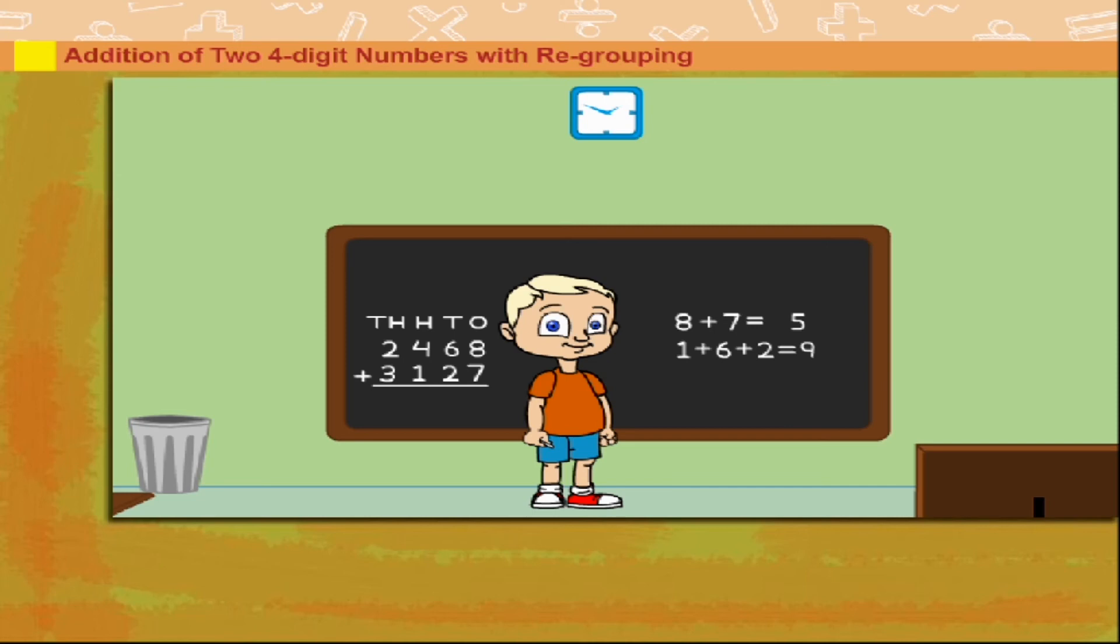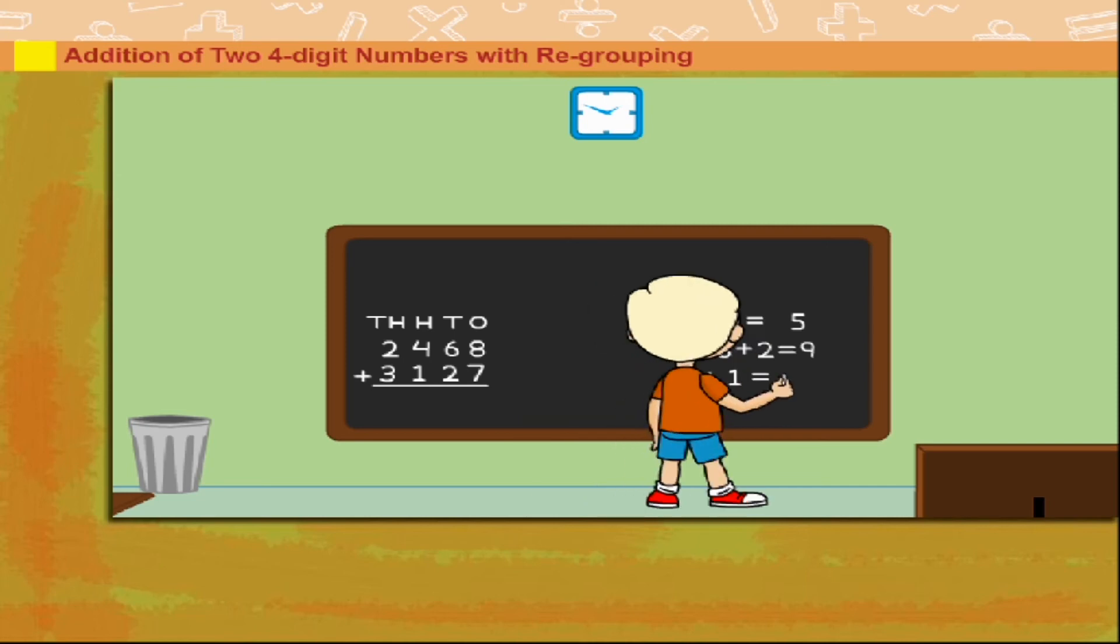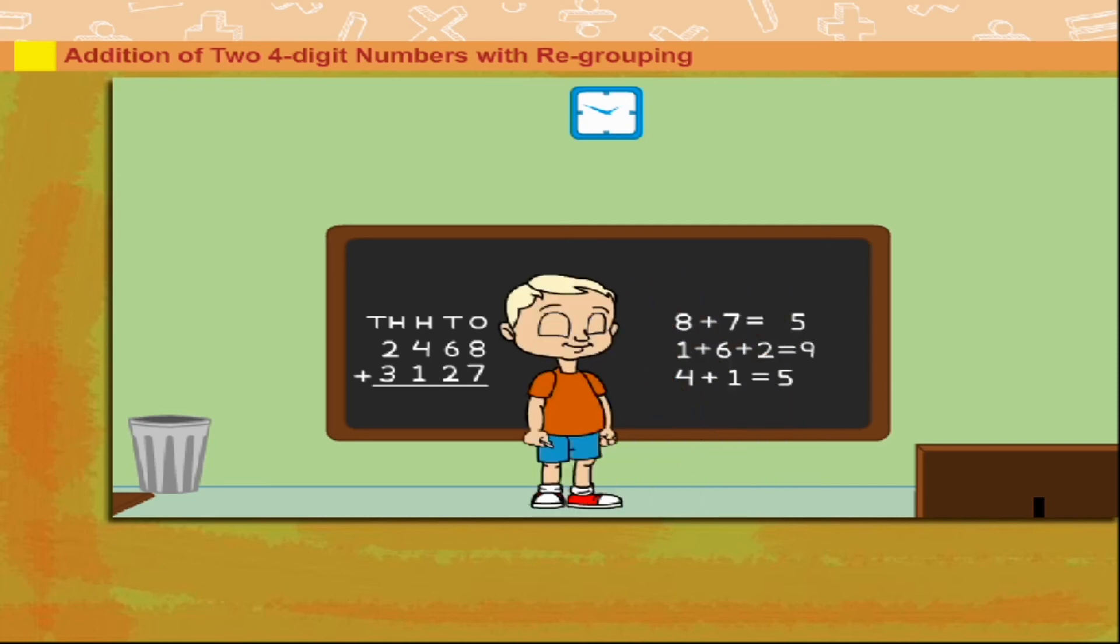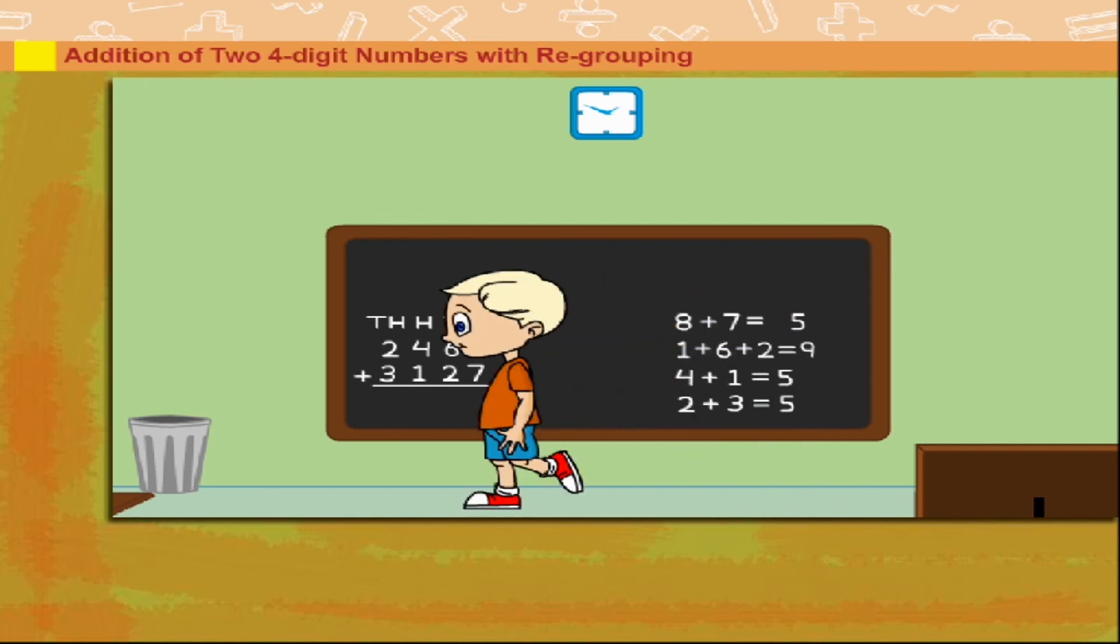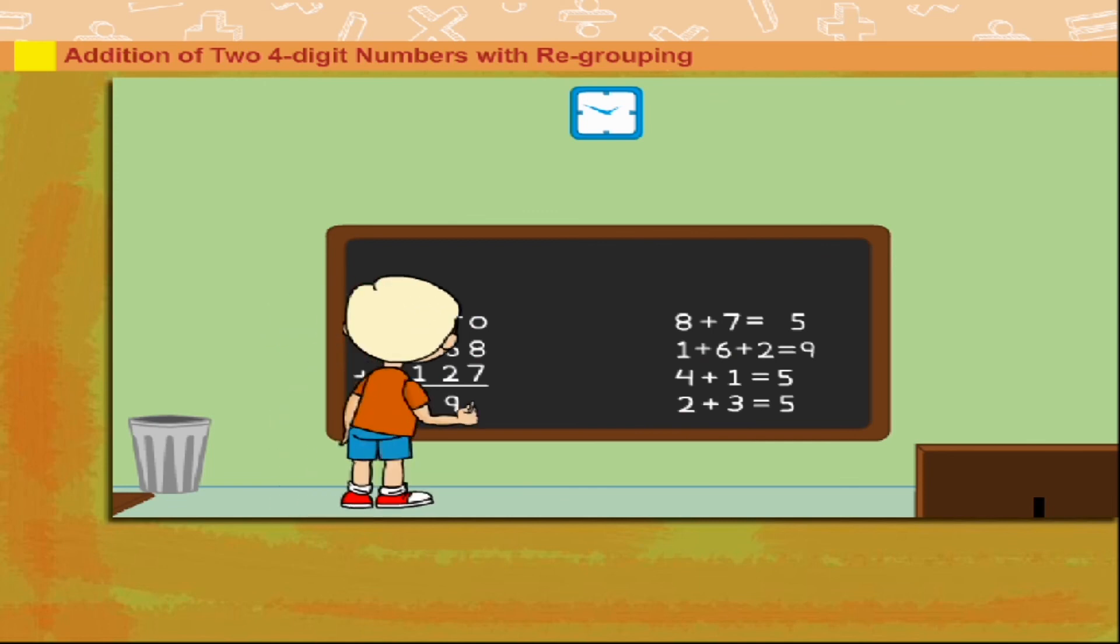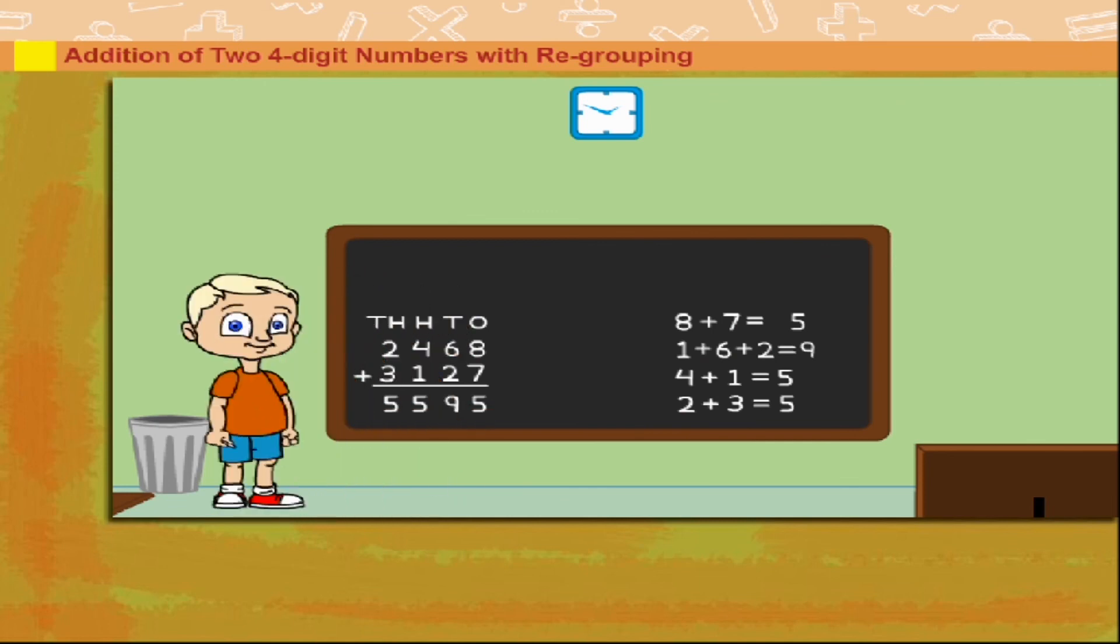He now adds the hundreds: 4 plus 1 equal to 5, and then the thousands: 2 plus 3 equal to 5. He writes his answer 5595. That was good Beanie.